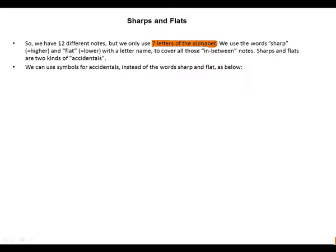We can use symbols for accidentals instead of the words sharp and flat, as in the example below: a sharp symbol like this, a flat symbol like this.